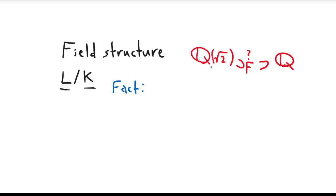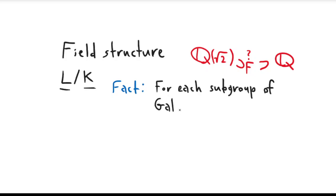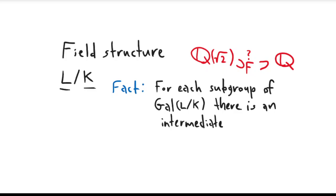So when you have a Galois extension — this is an example of a Galois extension — the fact is that for each subgroup of the Galois group, written as Gal(L over K), there is an intermediate field. And there's a one-to-one correspondence between these.